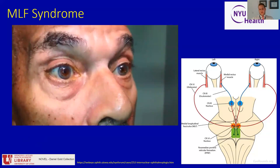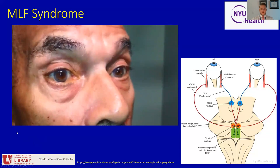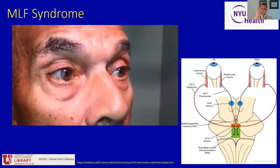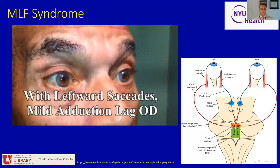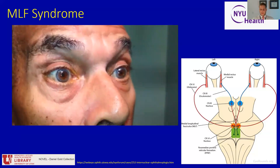In this patient, Dr. Gold is evaluating them with an optokinetic drum — a series of lines moved in front of the patient's eyes as they're asked to focus on those lines — a way of testing both fast eye movements (saccades) and slow eye movements (smooth pursuit). We can see that with leftward saccades, there's an adduction lag of the right eye, meaning there's a right INO that's more subtle here than the first two cases in this video.